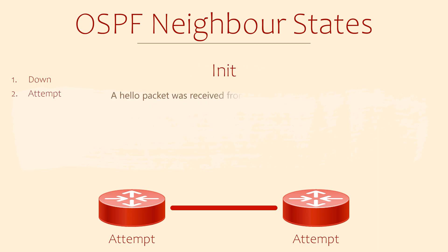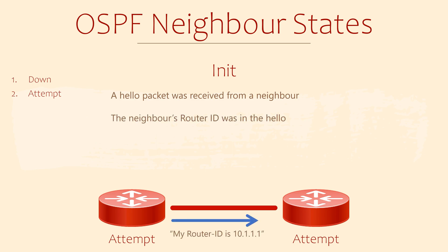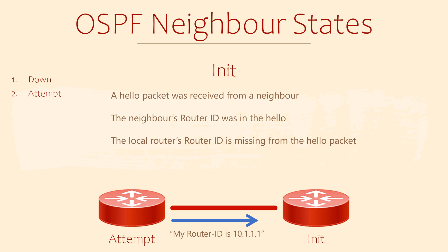The init state means that a hello packet has been received from an adjacent router. This router has introduced itself and shared its router ID. The hello packet doesn't include our own router ID though. When a router sends hello messages, it includes a list of all router IDs of all neighbouring routers. That means a router should eventually see its own router ID in a hello packet from an adjacent router. So this state means that communication has started, but it's not bidirectional yet.